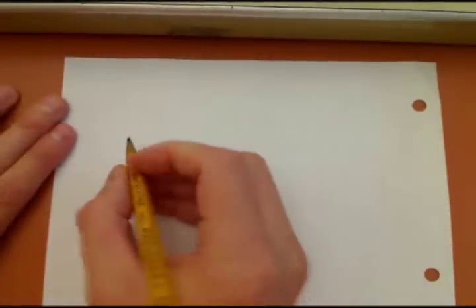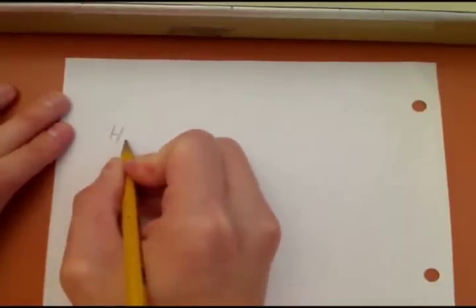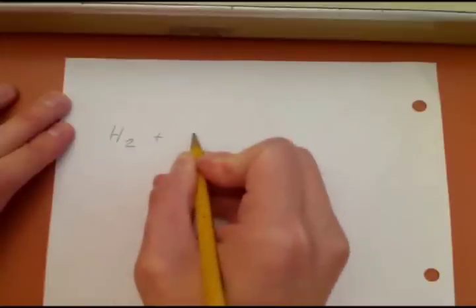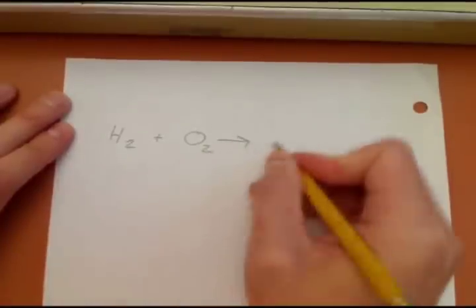Alright, we are going to talk about balancing chemical equations. So first let me give you an easy example. If you think of making water, you have hydrogen gas that comes together with oxygen gas to form water.